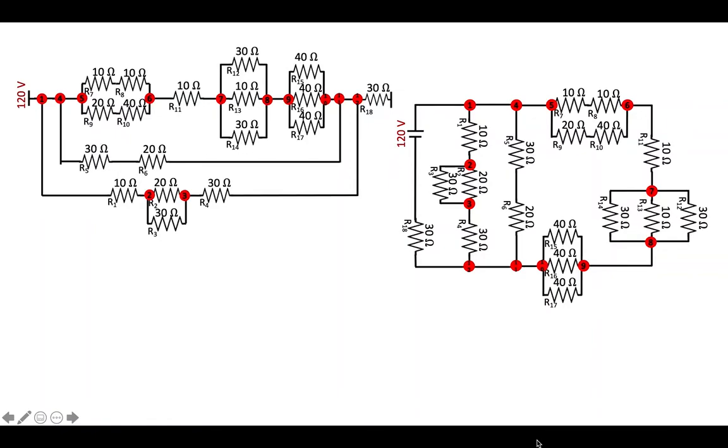All right, so we started with this 18 resistor, 12 junction, 120 volt circuit and this was the first drawing. This was just breaking the battery in half and drawing it out in a line. We did that in class and let me just work through crushing it down.